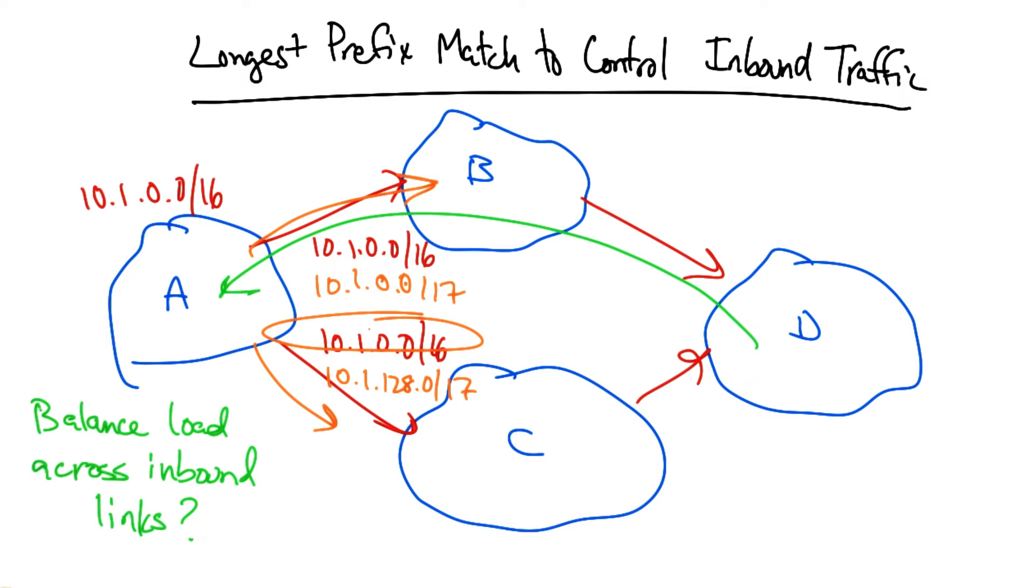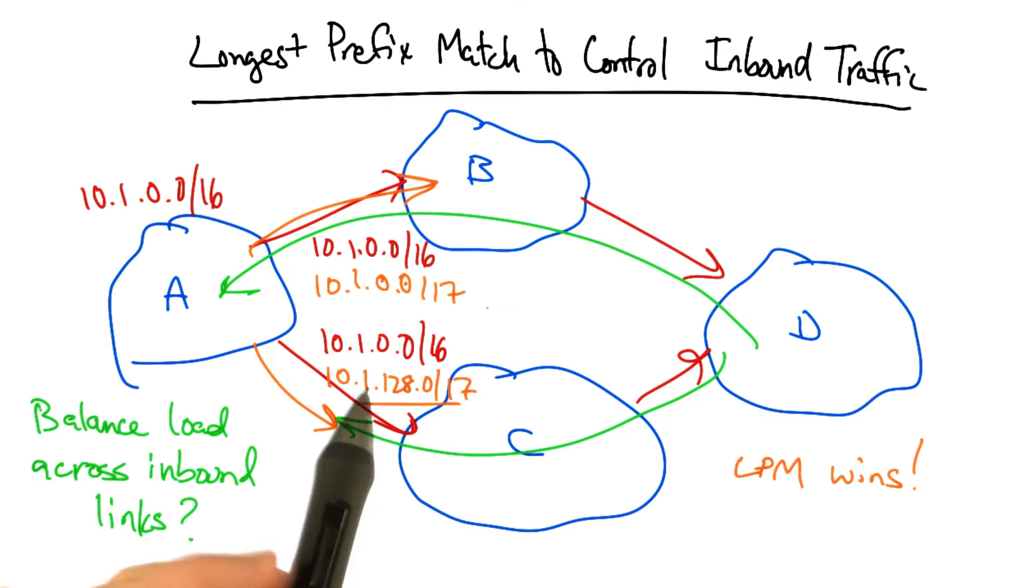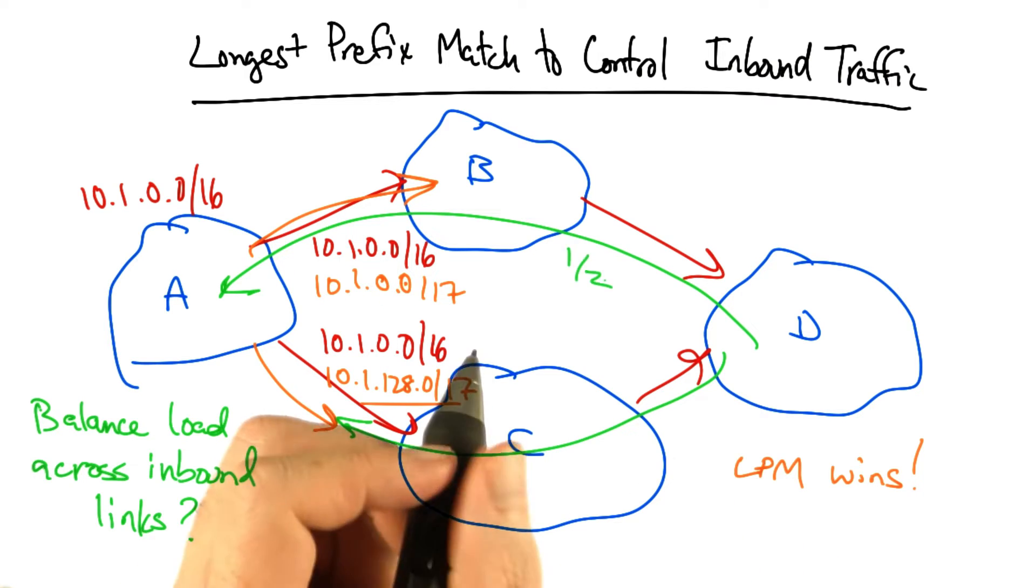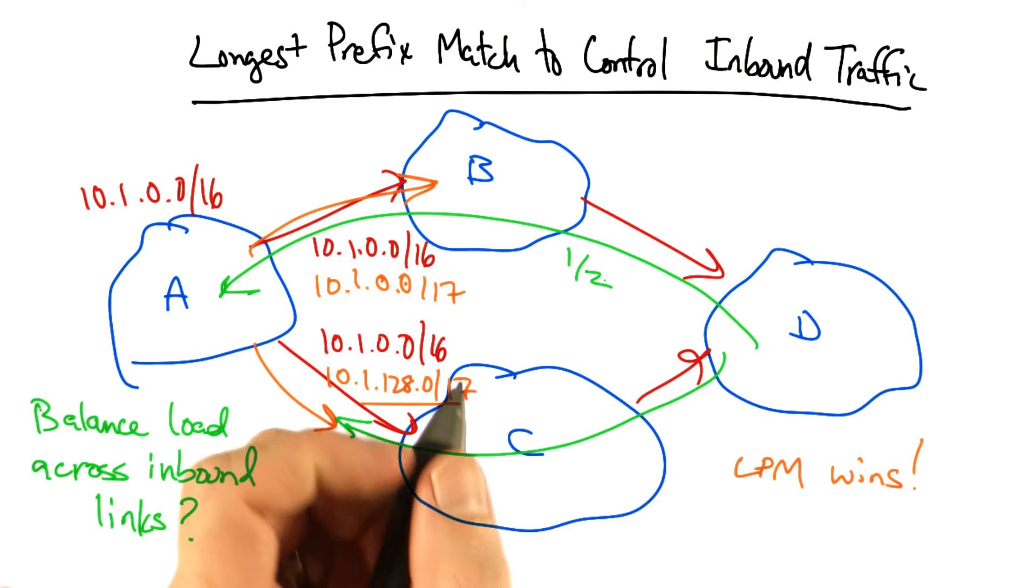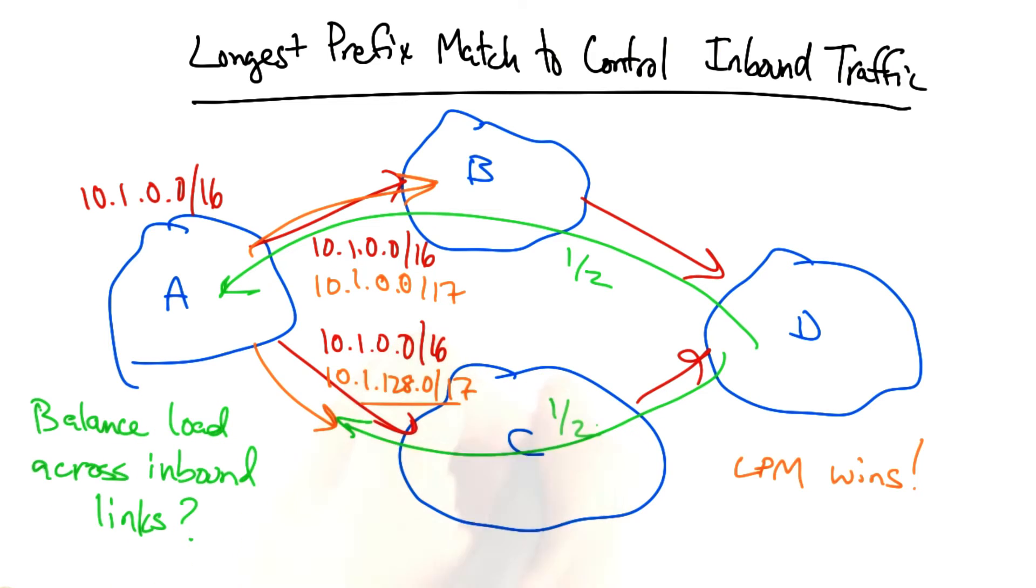Now if either link fails, the covering slash 16 will ensure that the prefix remains reachable by one of the two upstream links. But because longest prefix match wins, the traffic for 10.1.128 would now traverse the bottom link and the traffic for 10.1 slash 17 would now traverse the top link, effectively sending traffic for half of the prefixes along the top path and traffic for the other half of the prefixes along the bottom path.